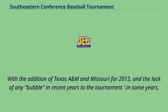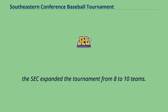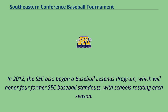With the addition of Texas A&M and Missouri for 2013, and the lack of any bubble in recent years to the tournament — in some years all eight teams in the tournament and a team or two that does not make the tournament would qualify for the NCAA regionals — the SEC expanded the tournament from eight to ten teams. The tournament began on Tuesday and concluded on Sunday. In 2012, the SEC also began a baseball legends program, which will honor four former SEC baseball standouts, with schools rotating each season.